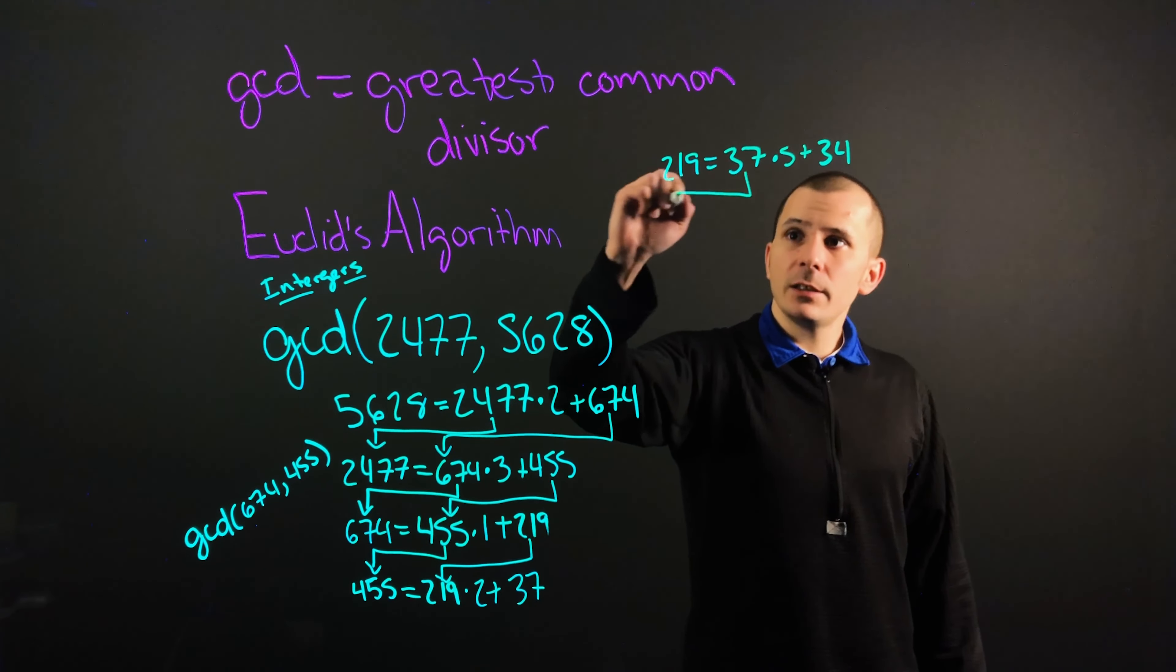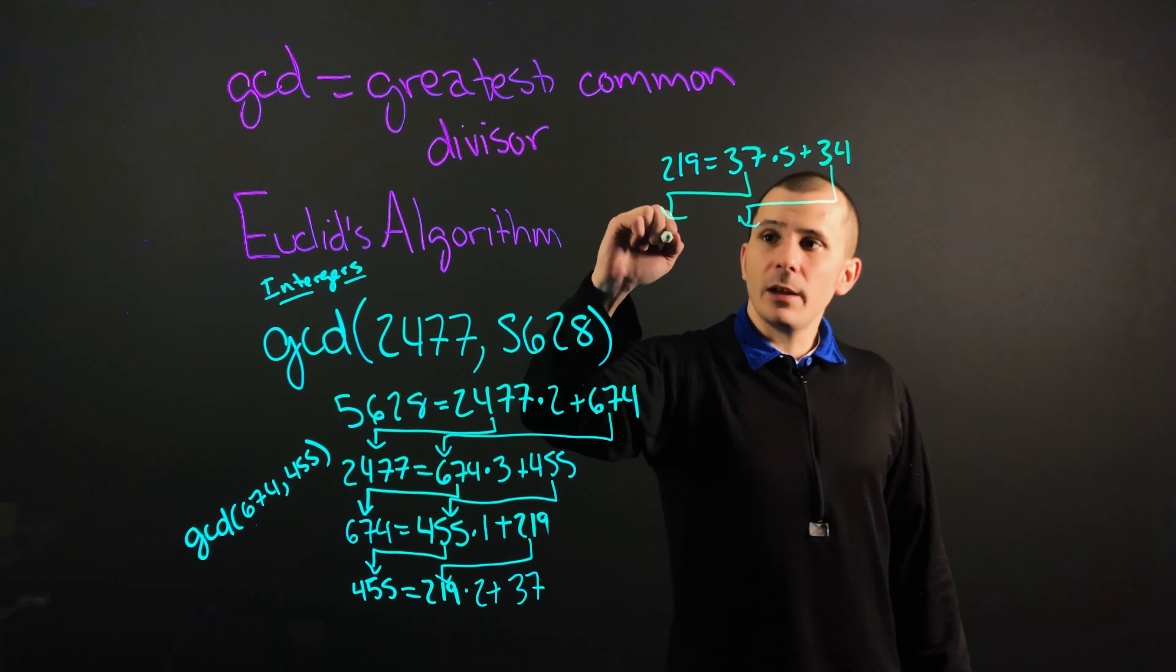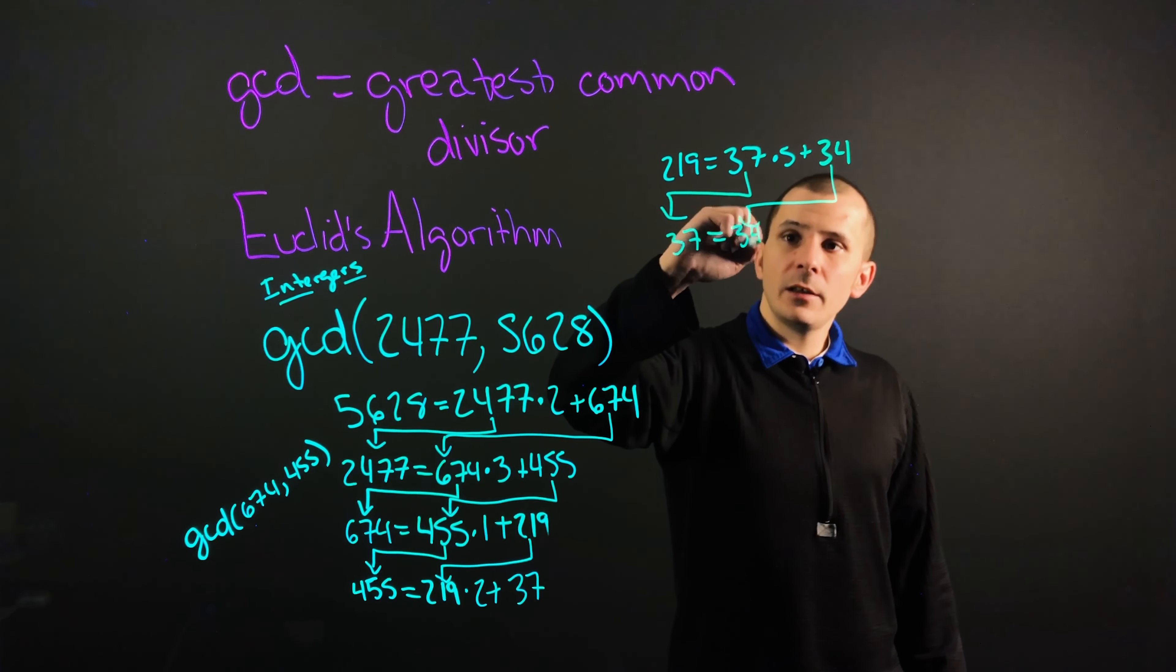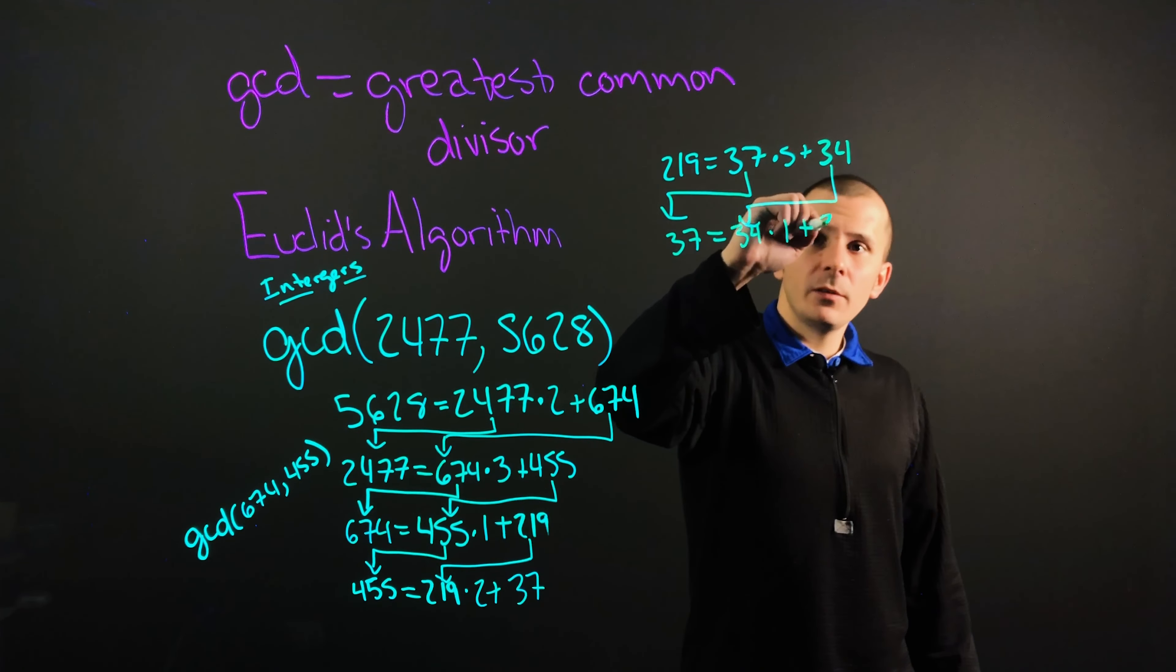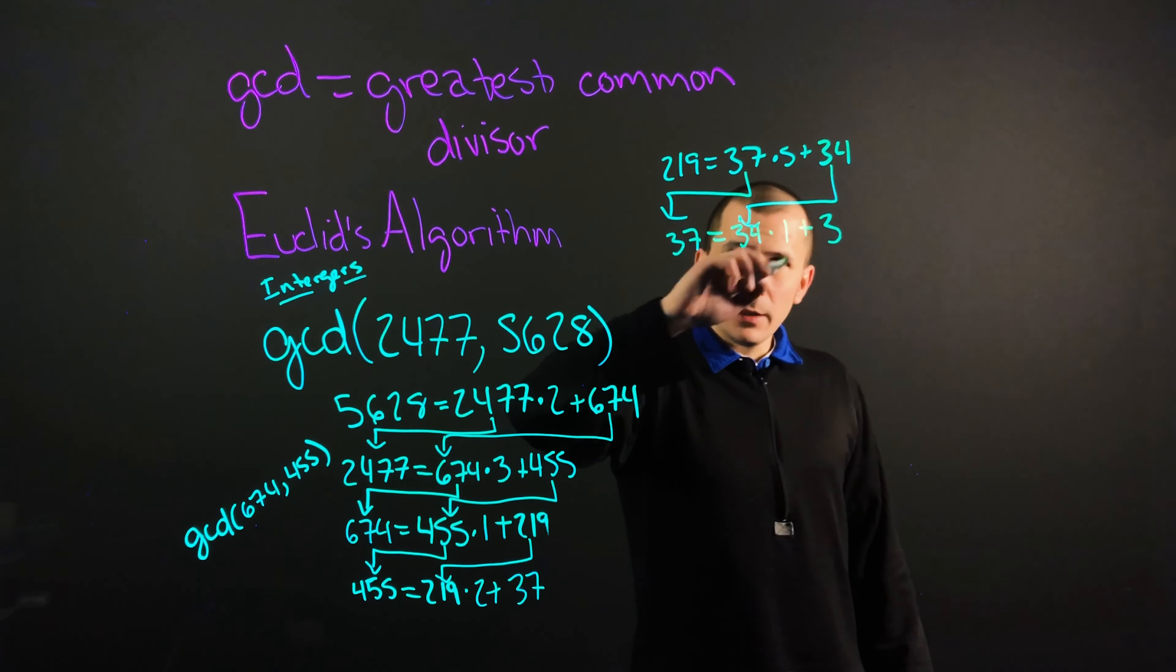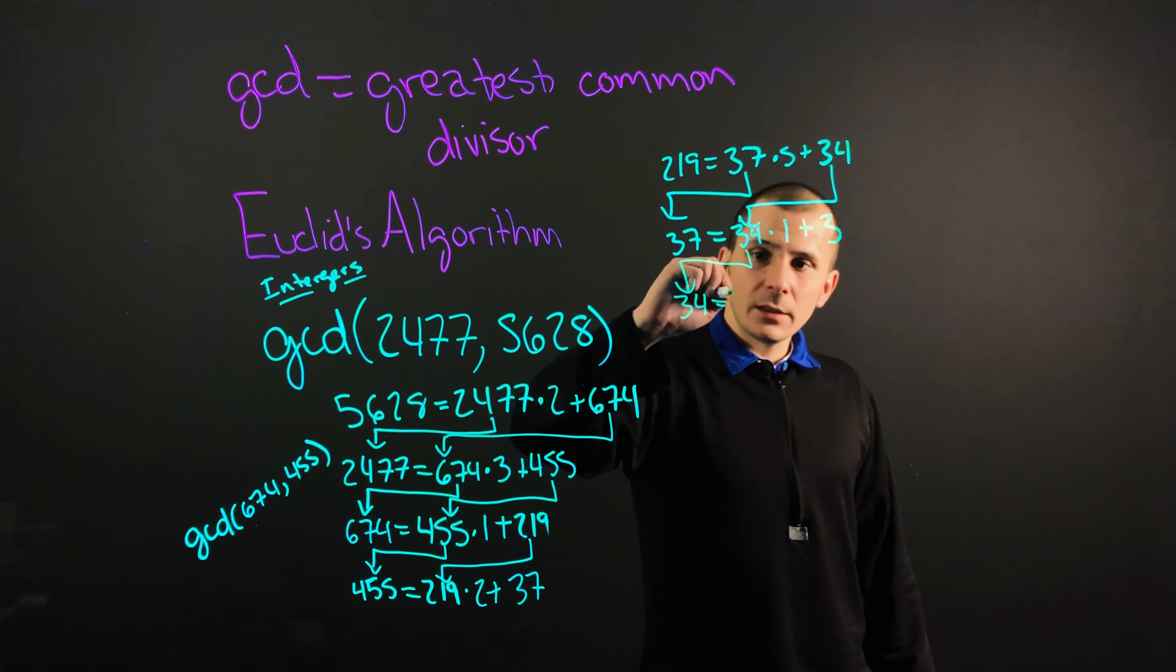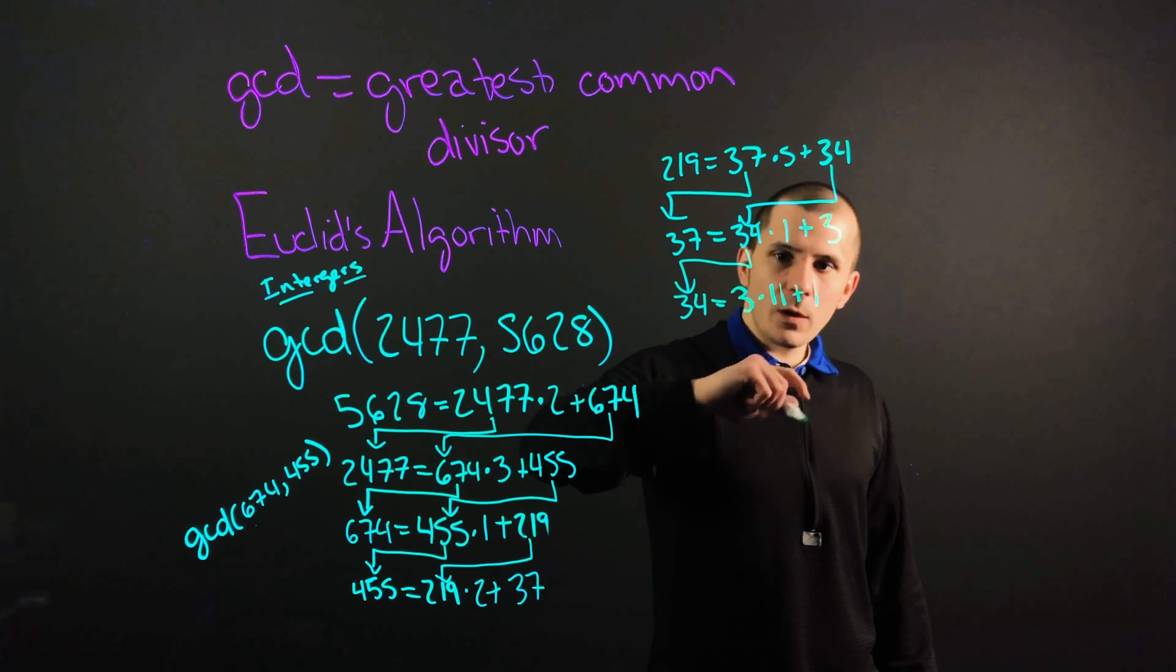And we'll take our numbers here and bump them over again, just as we did before. So we'll have our 37 equals 34 times by 1 plus 3. And then we will take this again, so we have 34 equals 3 times by 11 plus 1.